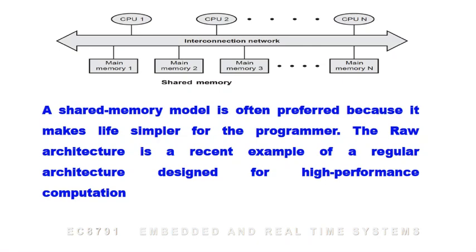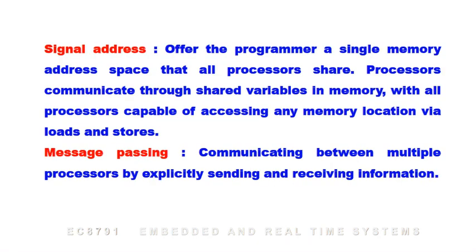A shared memory model is often preferred because it makes life simpler for the programmer. The RAW architecture is a recent example of a regular architecture designed for high performance computation. Under the single address space model, all processors share a single memory address space and communicate through shared variables in memory, with all processors capable of accessing any memory location via loads and stores.